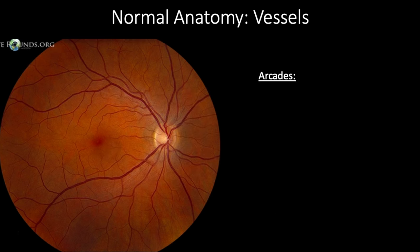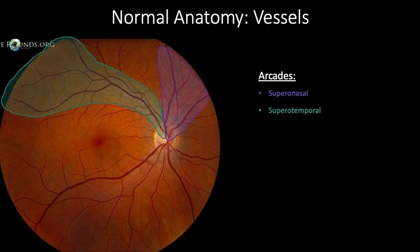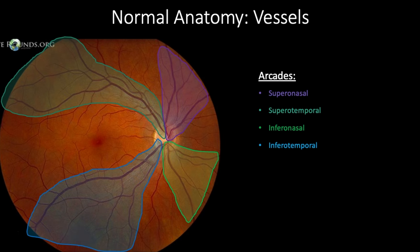Our next area of interest are the vessels of the retina. The central retinal artery and central retinal vein emerge from the optic disc and branch into four arcades: supranasal, supratemporal, infranasal, and infratemporal vessels.